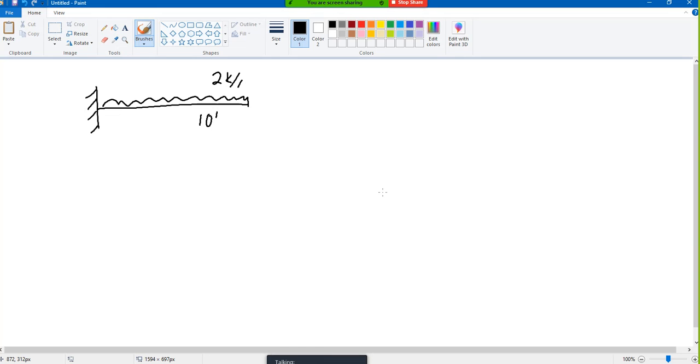Okay, so this is a cantilever beam with a uniformly distributed load of 2 kip per foot and span is 10 feet. What we will do, we will draw a shear force diagram and bending moment diagram.